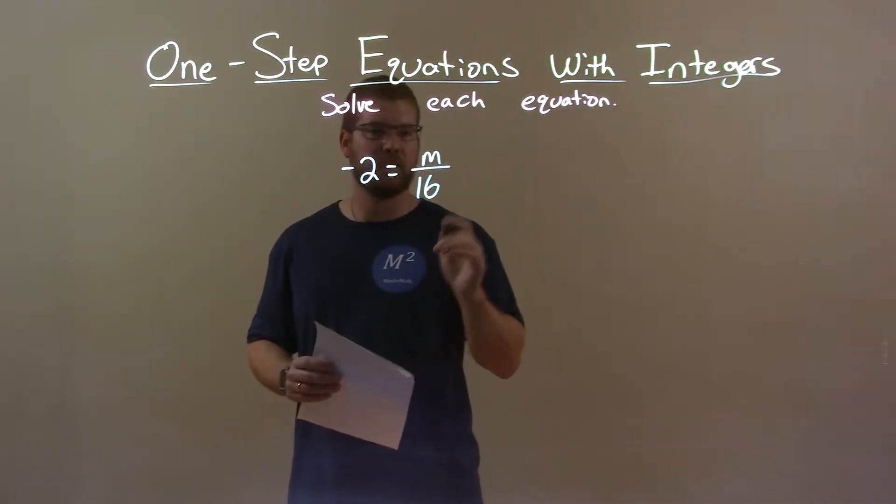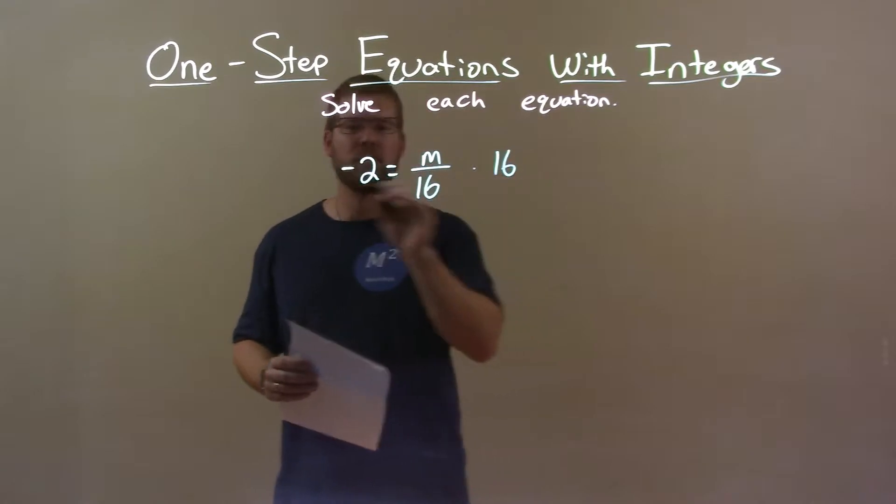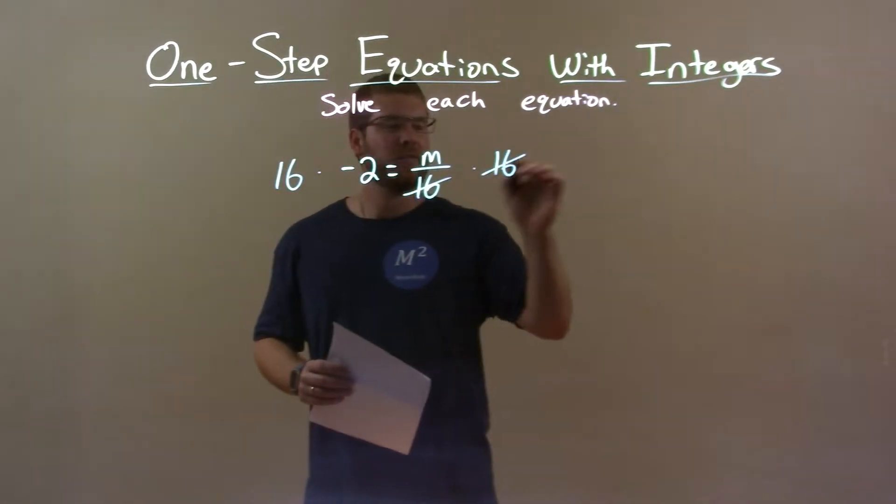To get it over to the other side, the 16, I need to multiply both sides by 16. That cancels out the division.